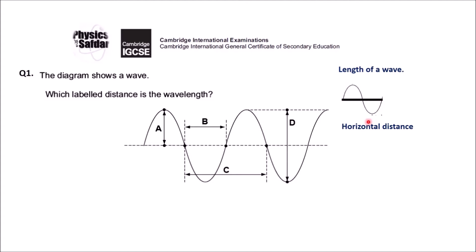One thing you can see clearly: vertical distance cannot be our wavelength. That's why option A cannot be our answer, and neither can option D. Then look at distance B — from this point to this point, it is not a complete wave, so it cannot be our answer. Check the last one, C — from this point to this point you have a trough then a crest, it's a complete wave, so option C is the right answer.